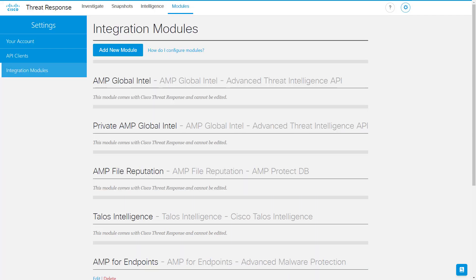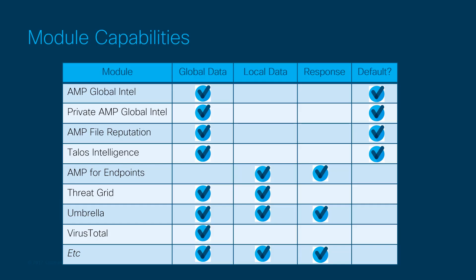All other modules require credentials and configuration, and we will cover each separately in the other videos in this series. These four alone are very powerful already, and there's no other place to search them all at once than here in Cisco Threat Response. However, the more modules you add, the deeper your research can be. Continue watching to find out more about the modules that provide local context and response and enforcement capabilities.